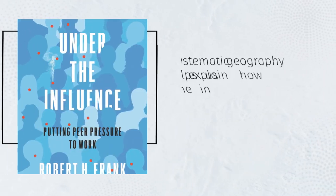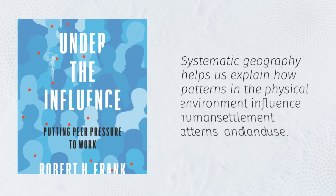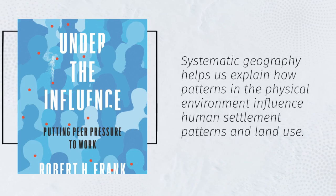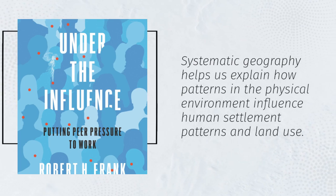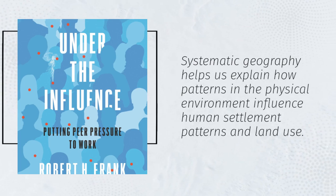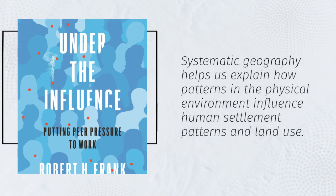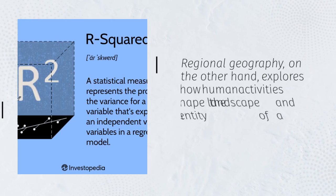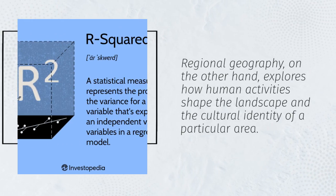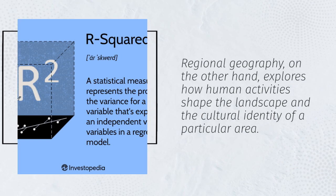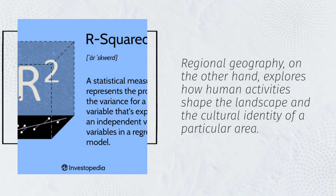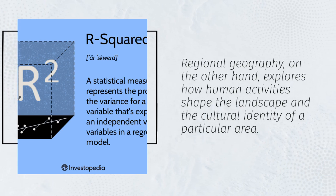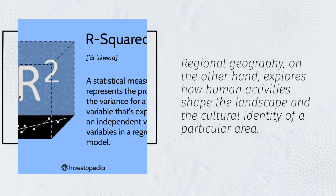Systematic geography helps us explain how patterns in the physical environment influence human settlement patterns and land use. Regional geography, on the other hand, explores how human activities shape the landscape and the cultural identity of a particular area.